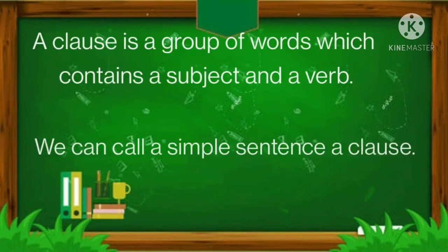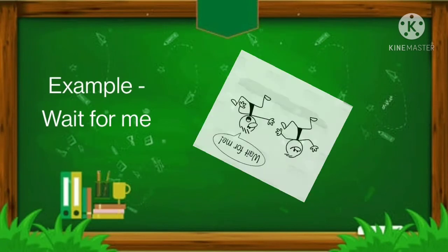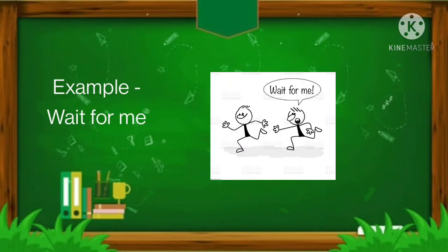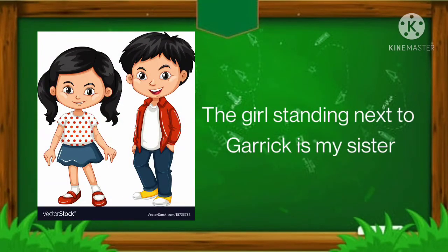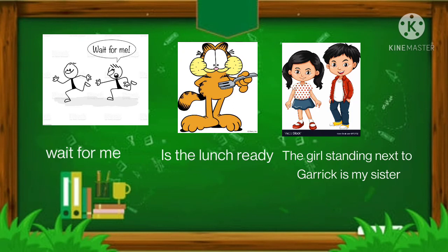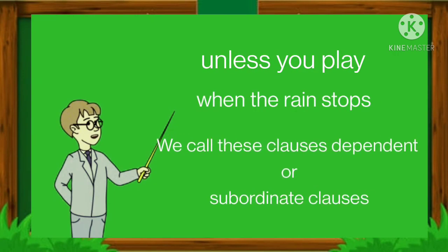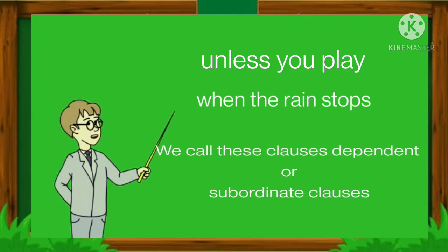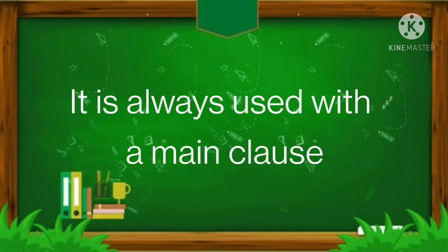A clause is a group of words which contains a subject and a verb. We can call a simple sentence a clause. For example: 'Wait for me.' 'Is the lunch ready?' 'The girl standing next to Garrick is my sister.' If a clause makes sense by itself, we call it a main clause. However, many sentences contain clauses which do not make sense by themselves, for example: 'unless you play', 'when the rain stops'. These are called dependent or subordinate clauses, and are always used with a main clause.